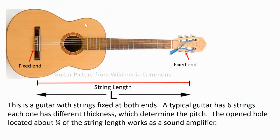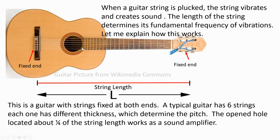This is a guitar with strings fixed at both ends. A typical guitar has six strings, each with different thickness, which determines the pitch. The open hole located about one quarter of the string length works as a sound amplifier. When a guitar string is plucked, the string vibrates and creates sound. The length of the string determines its fundamental frequency of vibration.